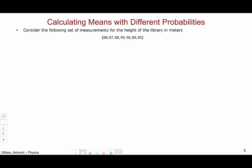Consider the following set of measurements for the height of the library, as measured in meters: 88, 87, 88, 90, 90, 88, and 85. We know how to calculate the average of a set of numbers. You add up all of the numbers, and then divide by the number of measurements.